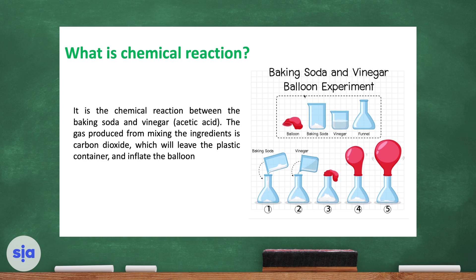We are going to use a balloon as a detector. In step one, we add baking soda to the flask. In step two, we add vinegar — which is acetic acid. In step three, we fix the balloon to the nozzle of the flask. A chemical reaction will happen between the vinegar and the baking soda, forming a gas called carbon dioxide, which will inflate the balloon.